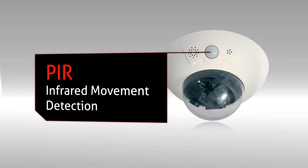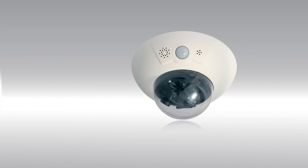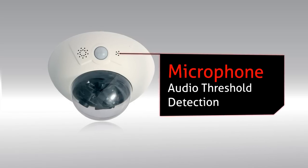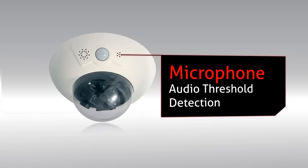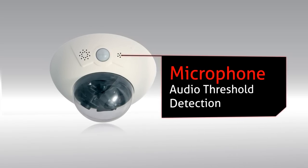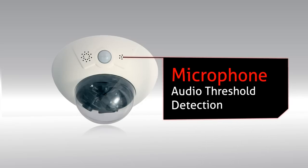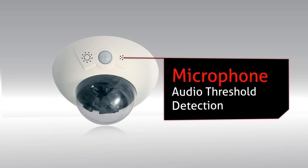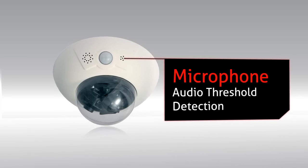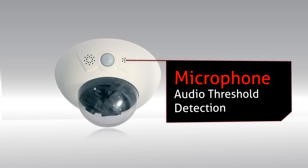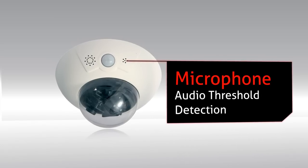Cameras without a built-in PIR can be connected to detached PIRs and other inputs. The built-in microphone can be used as an alarm trigger when a predetermined noise decibel threshold is exceeded. This is an extremely useful feature as alarms can be set to activate by the sound of a fire alarm or even the horn of a truck at a boom gate.